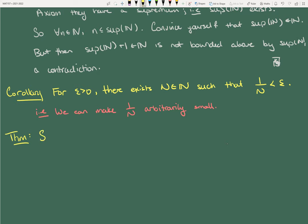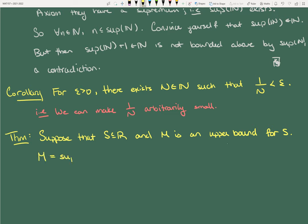Suppose that S is a subset of ℝ and M is an upper bound. M equals the supremum of S if and only if, for every epsilon greater than zero, there exists an element s in S such that M − epsilon < s ≤ M.